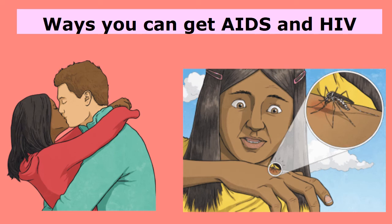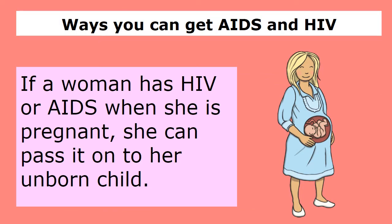Other ways you can get HIV: through bodily fluids or kissing if a person has it — such as through saliva. Also, by being bitten by a mosquito that has bitten a person with HIV, which can therefore transfer it to you. Another way is if a woman has HIV or AIDS and she is pregnant, she can pass it on to her unborn child.